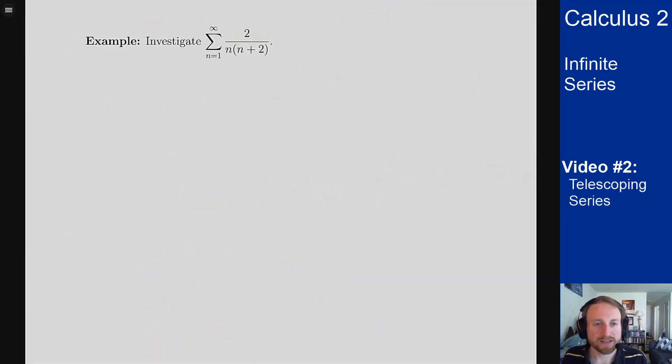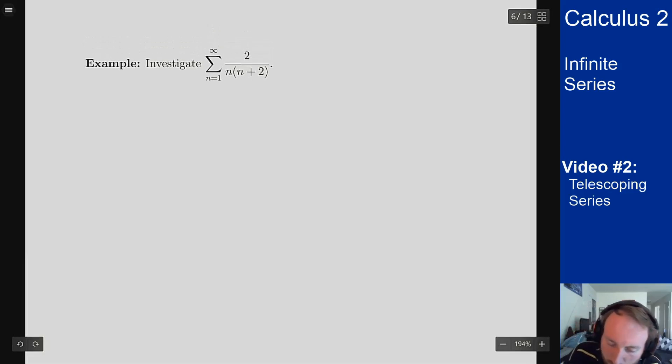I don't get that normally with most other series, but for telescoping series I can work that out. So here is a standard example of what you might see for a telescoping series. Investigate the sum from N equals one to infinity of two over N times N plus two. Now this one is not written in the telescoping form like the other one was.